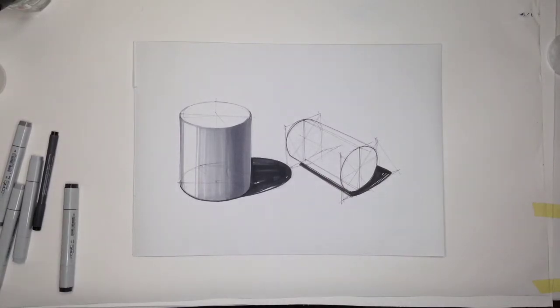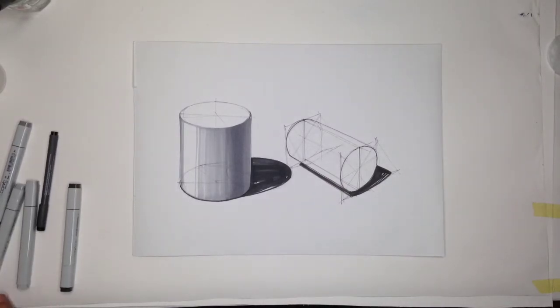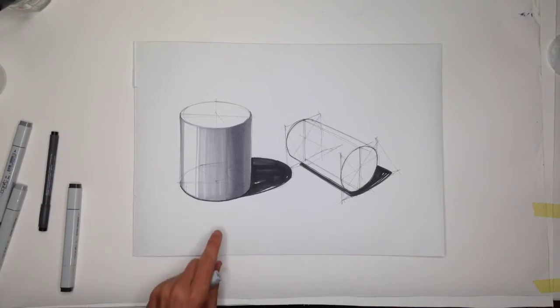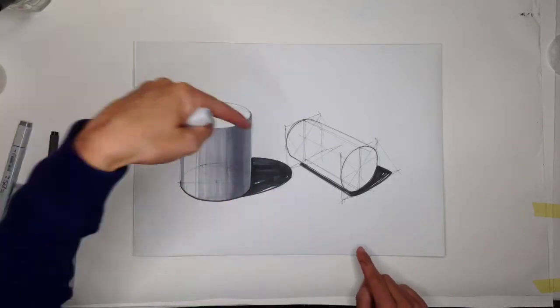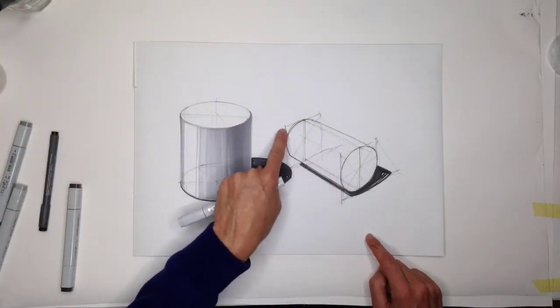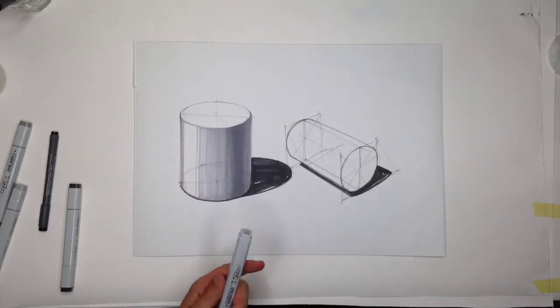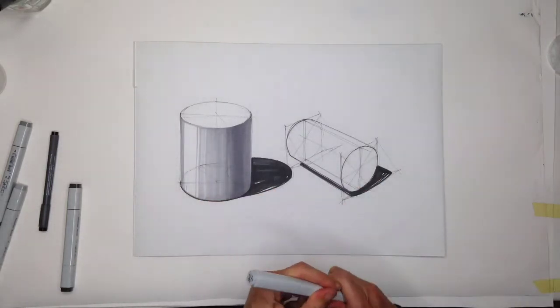Okay, so there's my cast shadow. Now I'm going to consider the light direction. The light's coming from here, so around here I want to have my lightest part. Let's just start with one side.